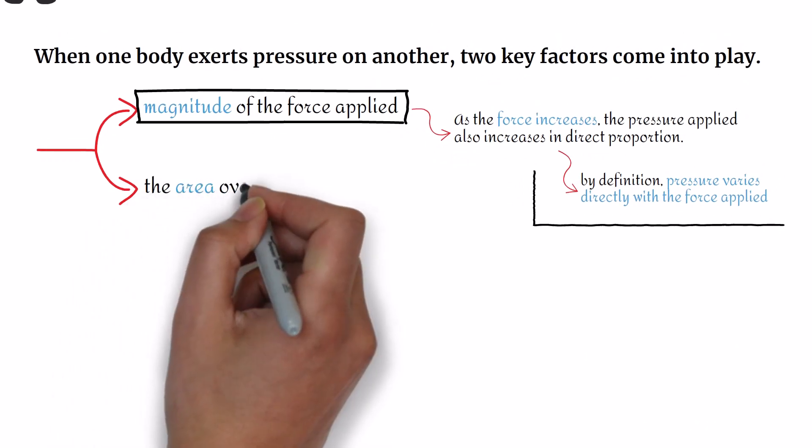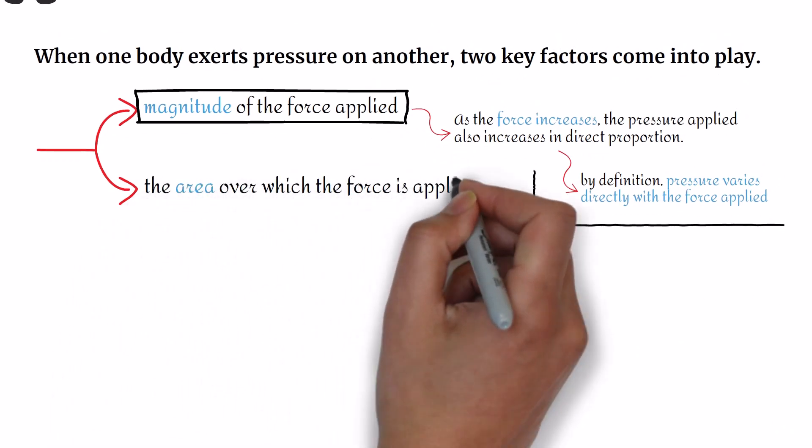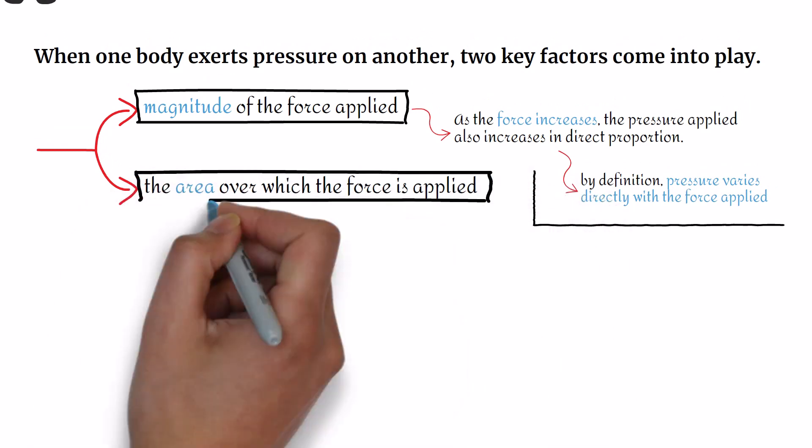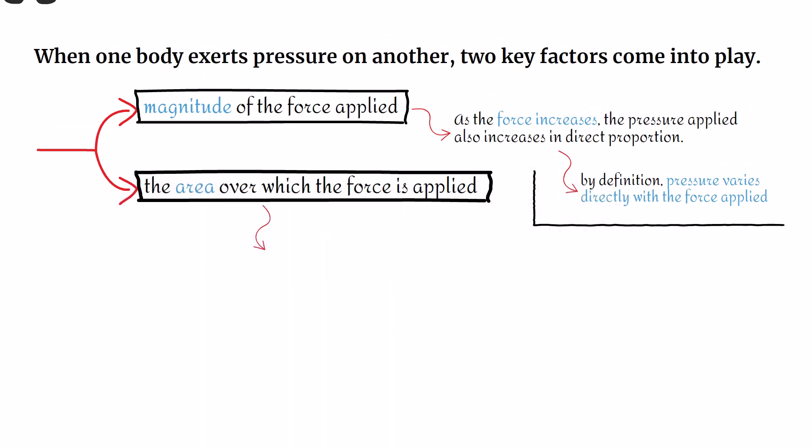The second factor is the area over which the force is applied, which is the contact surface between two objects.